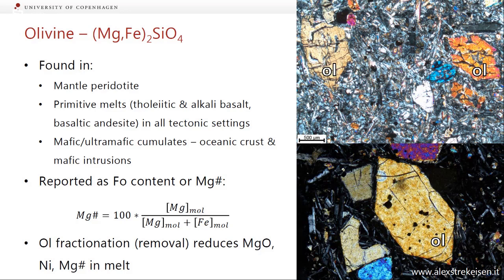Olivine is also found in mafic and ultramafic cumulates. We covered dunites and troctolites in the oceanic crust, and dunites, harzburgites, gabbros — all sorts of stuff in mafic intrusions. We usually report the composition as the forsterite content or the Mg number, which is basically the molar magnesium divided by molar magnesium plus iron, times 100 to make a percentage. If olivine is crystallizing and being fractionated — that is, being removed from the melt — then it reduces the MgO, nickel, and magnesium in the melt.